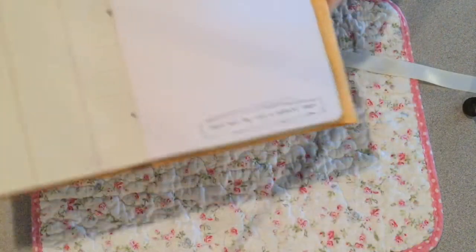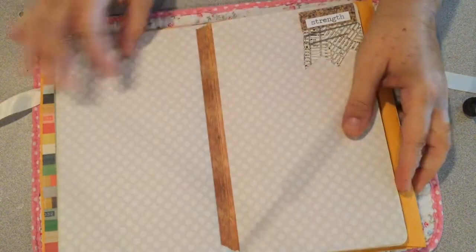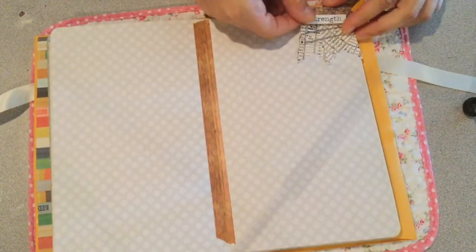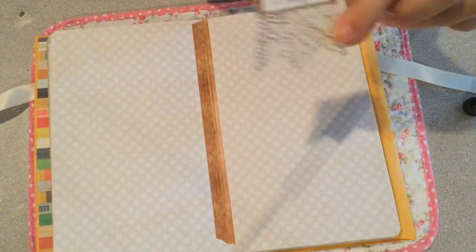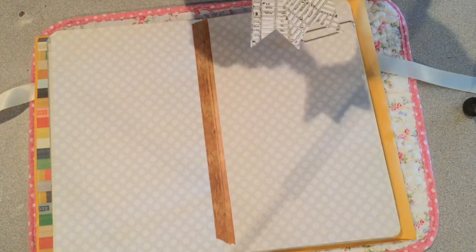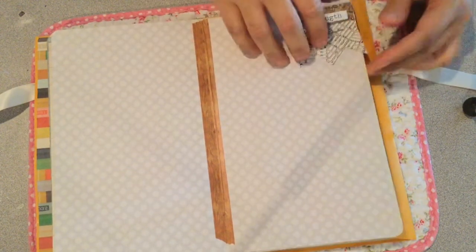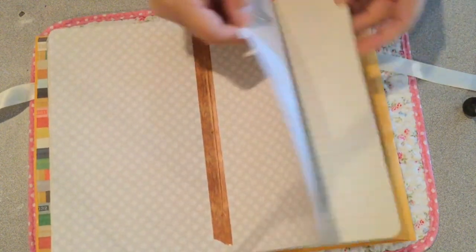More rubber stamping. This one says 'start each day with a grateful heart.' This is a little embellishment I made that just has 'strength' on it. It's two punches stapled together with a banner at the top.